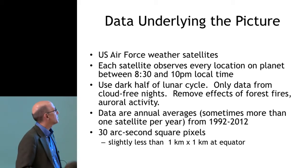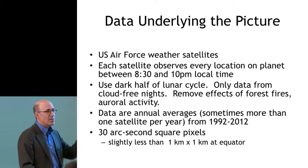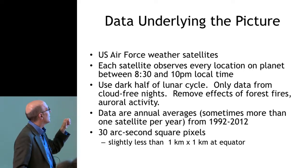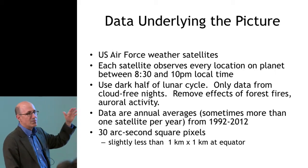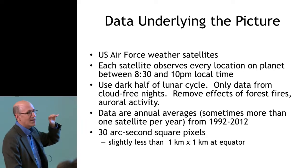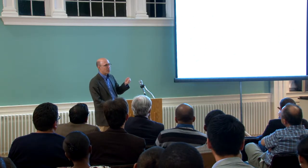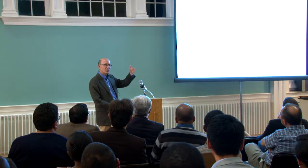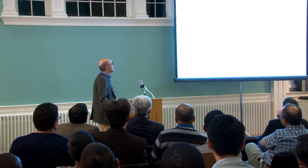The data comes from U.S. Air Force weather satellites that pass over every point on earth between 8:30 and 10 p.m. local time. They deal with the lunar cycle, aurora borealis, cloud cover, and similar factors. What we get is the average light visible on cloudless dark nights over the course of the year. We now have 21 years of this data — annual averages from 1992 to 2012. For those who remember the start of the empirical literature on economic growth — Romer's paper, Barro's paper, my own paper — all started with 25 years of panel data, so we're closing in on that horizon.